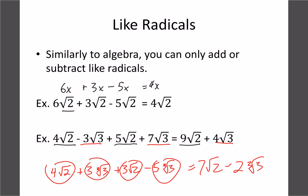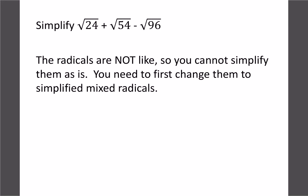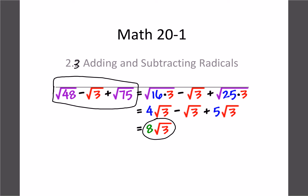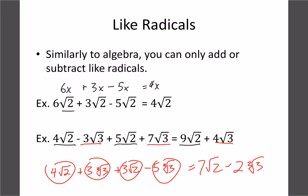As long as the index number and the radicand are the same, you can combine them by adding or subtracting the coefficients. The challenging part is the simplifying. Going back to the title page example: root 48 becomes root 16 times root 3, giving 4 root 3; root 3 stays as 1 root 3; and root 75 becomes 5 root 3. Then 4 minus 1 plus 5 equals 8 root 3.